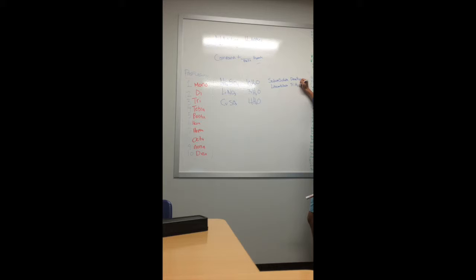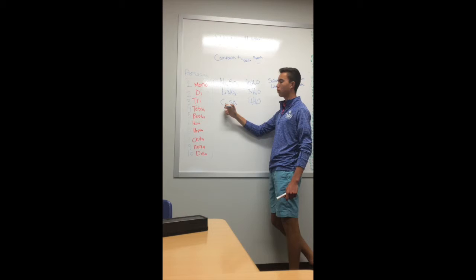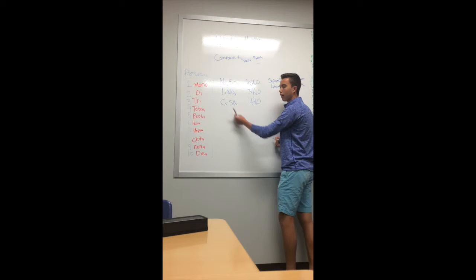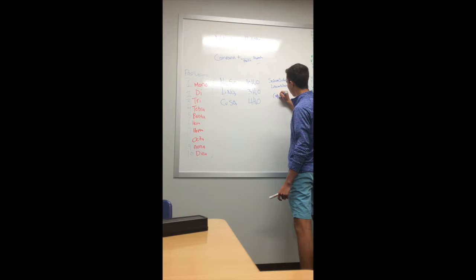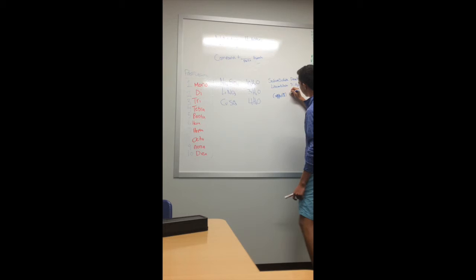Our next example is copper 1 sulfite. We know it's 1 because sulfite has a charge of negative 1. So we put copper 1 sulfite.